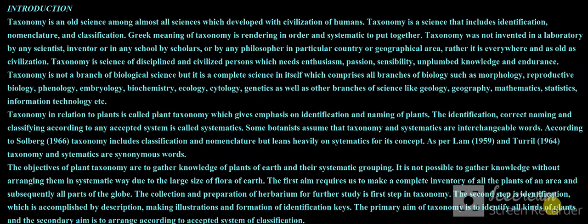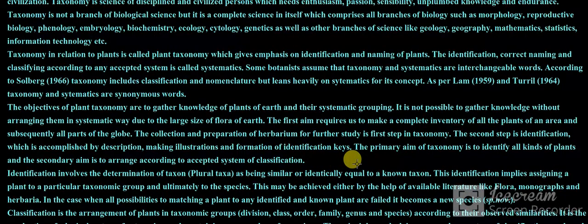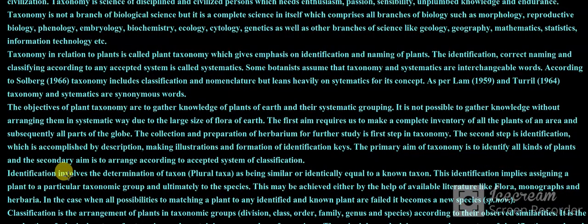The second step is identification, which is accomplished by description, making illustrations, and formation of identification keys. The primary aim of taxonomy is to identify all kinds of plants, and the secondary aim is to arrange them according to an accepted system of classification.